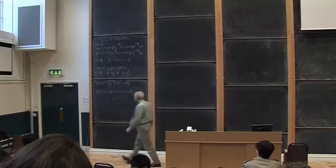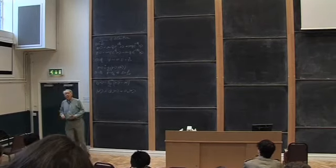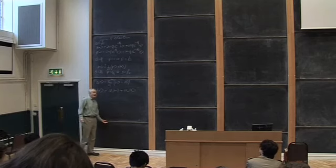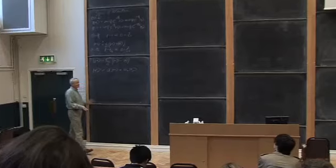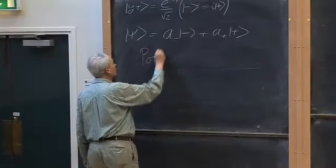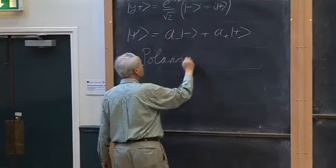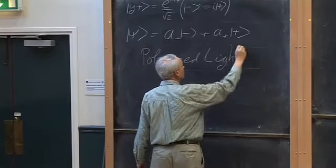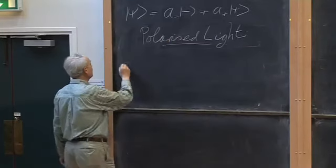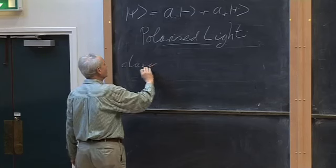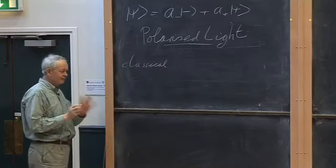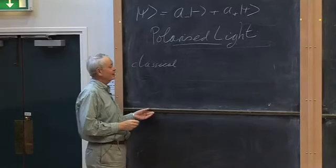Let's do another example of a two-state system: polarized light. This example enables us to connect back to classical physics in an interesting way. Let's start with classical physics — you may not have covered all of it yet as it may be part of an upcoming EM course, but you'll recognize enough.